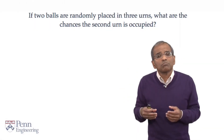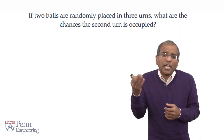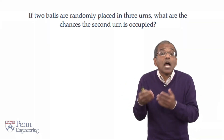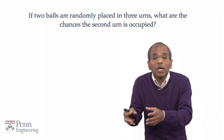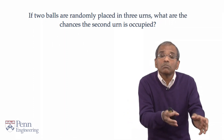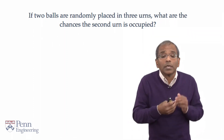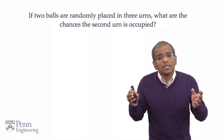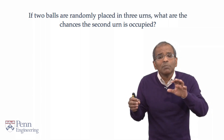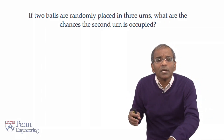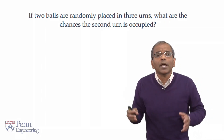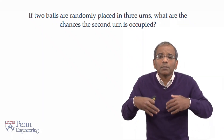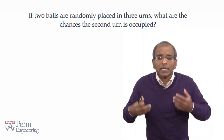Suppose one has two balls — call them A and B — and one places them randomly in three urns, call them 1, 2, and 3. What are the chances that the middle urn, the central urn, is occupied? Pause the lecture and see if you can build up to an answer.